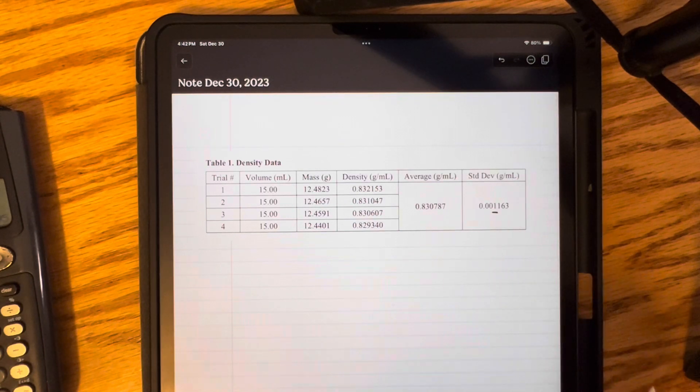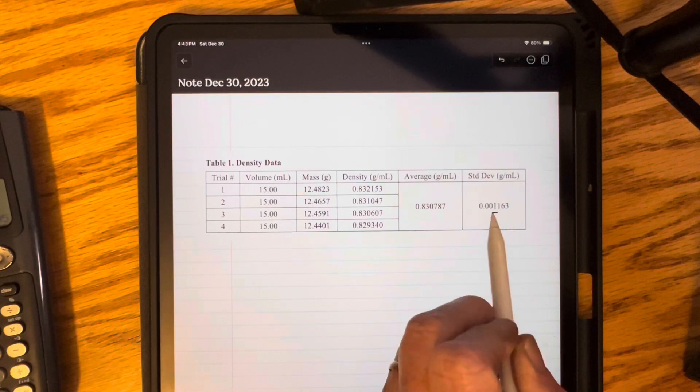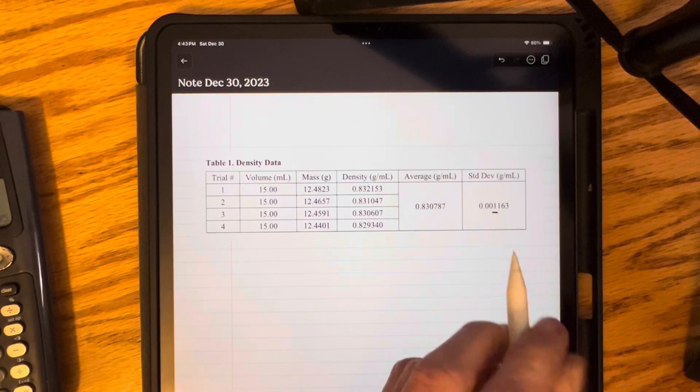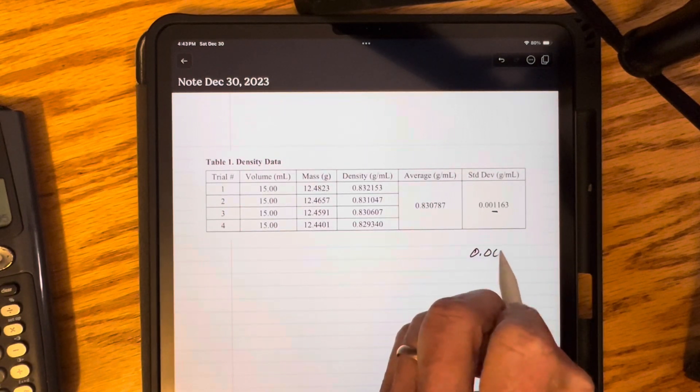We're going to look for the first non-zero digit, and we're going to round this standard deviation to one significant figure. So that would be 0.001.